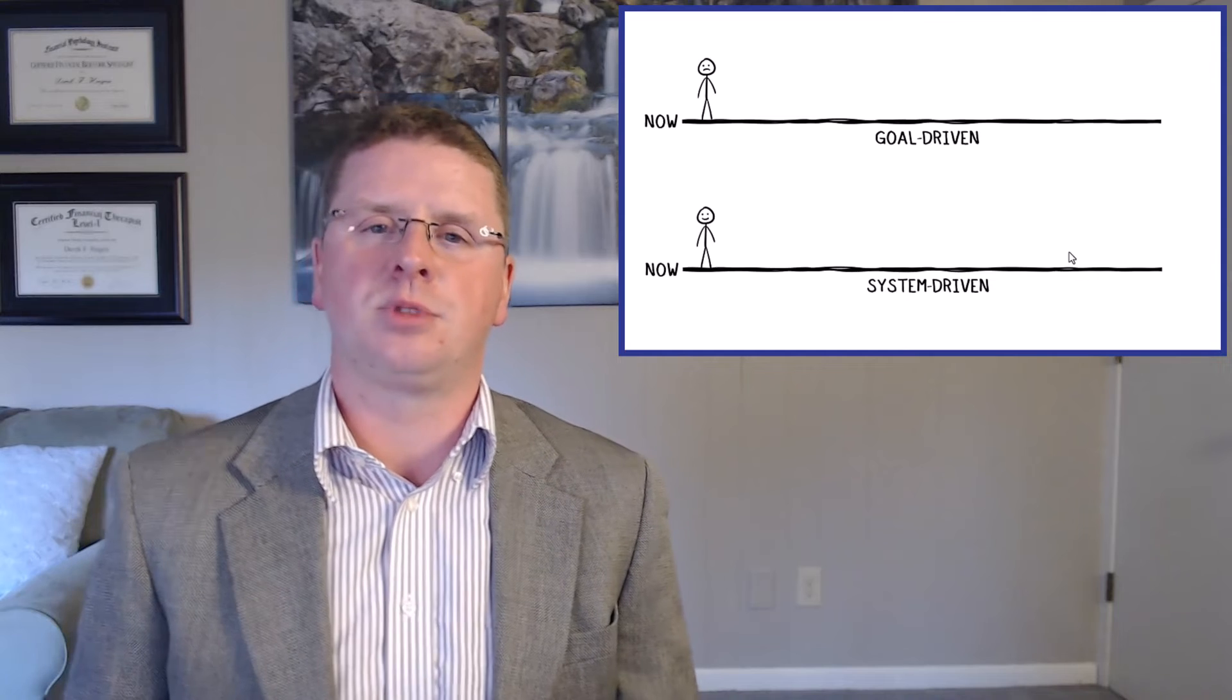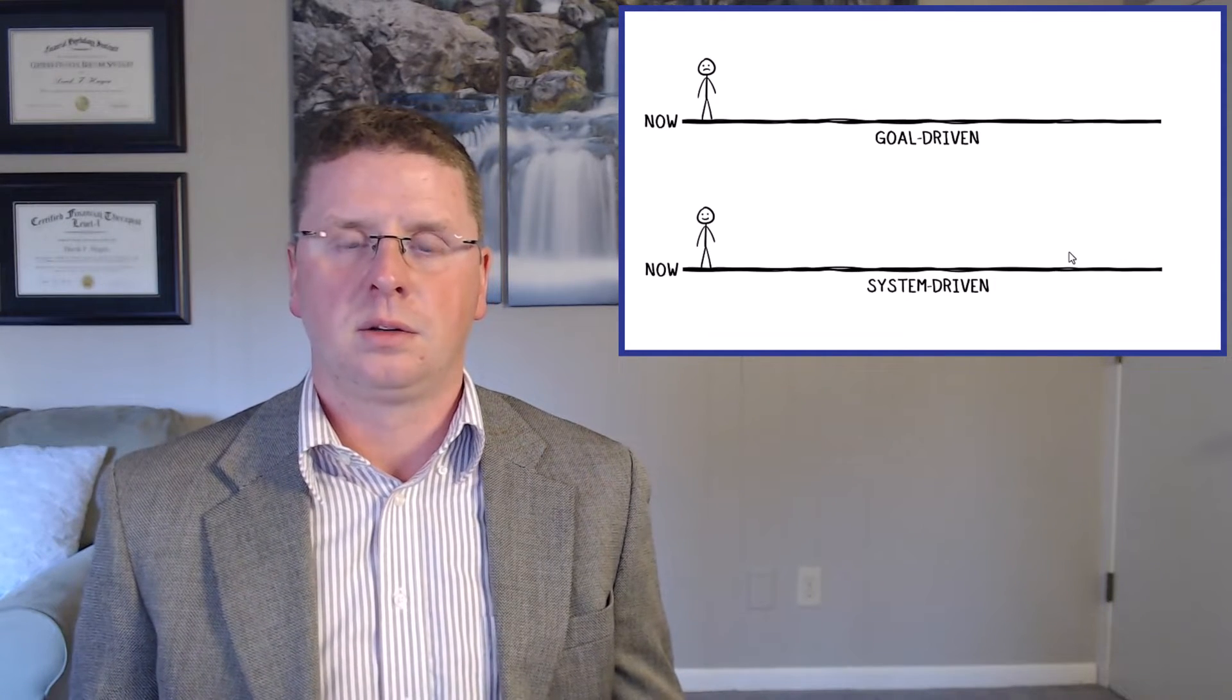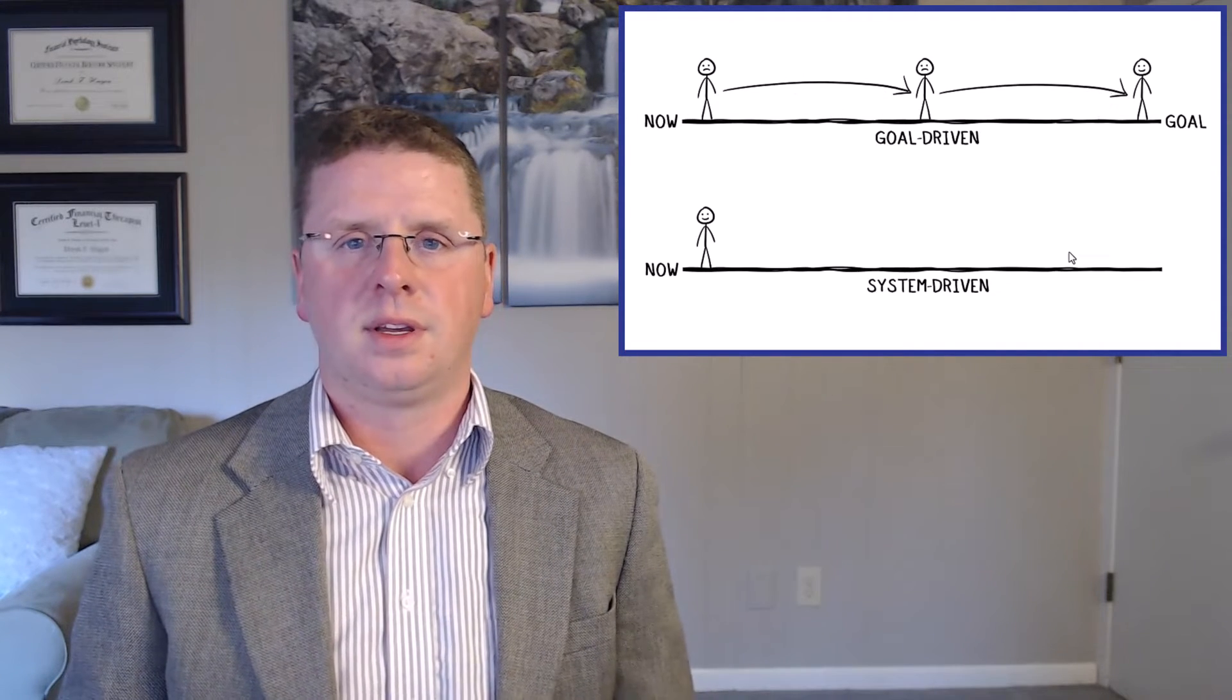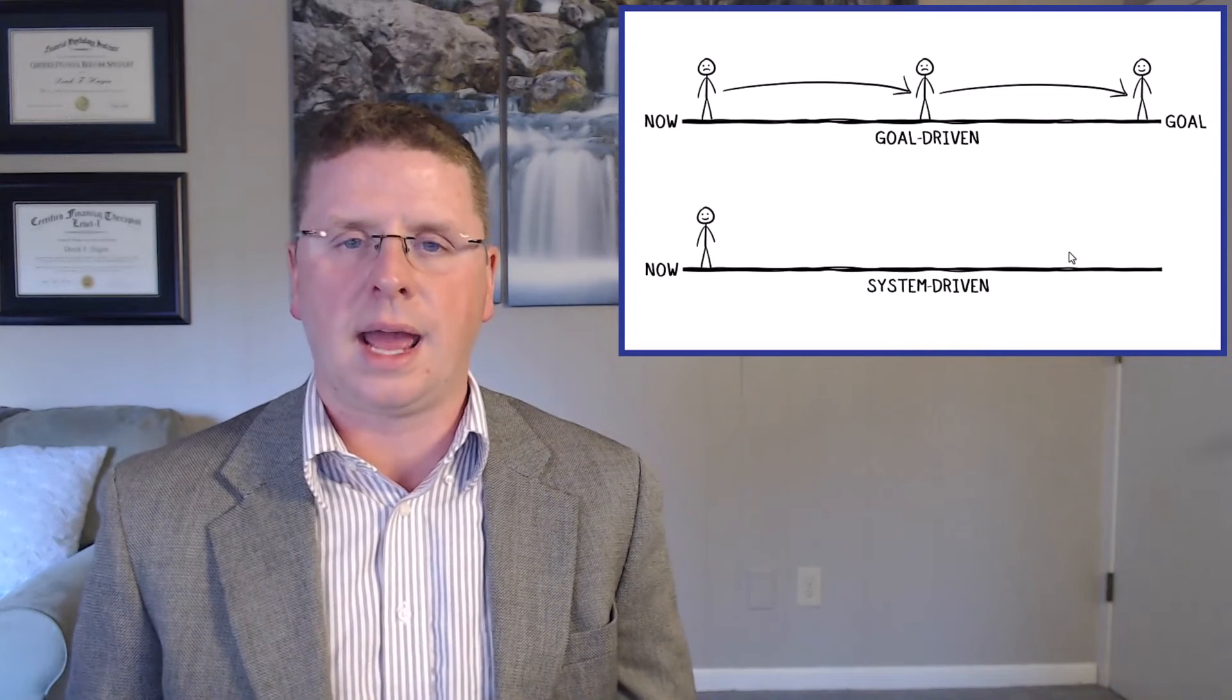Let's figure out the difference. Now you see the goal-driven person, this person is unhappy. The system-driven person, this person's happy. Okay, so the goal-driven person needs to have a goal to strive for, and you'll see that until they reach that goal, they're not happy.